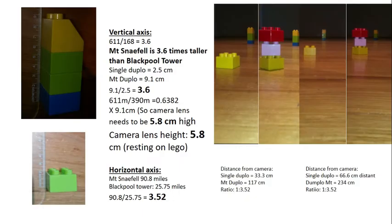Now let's go into some detail about the experiment. I'll try to model Mount Snaefell and Blackpool Tower as accurately as I could on the vertical axis and as accurately as I could on the horizontal axis. All the math is on the screen. You can pause and check them over.